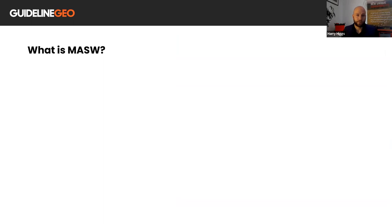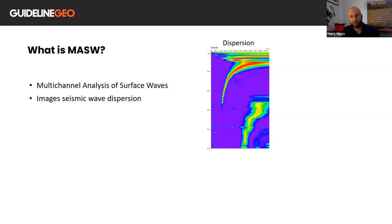So firstly, what is MASW? It's an acronym for the multi-channel analysis of surface waves. MASW is able to image a phenomenon of surface waves known as dispersion and using inversion methods we're able to reconstruct the shear wave structure of the Earth.